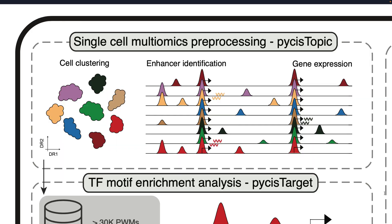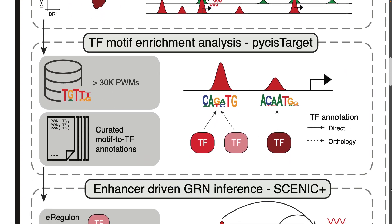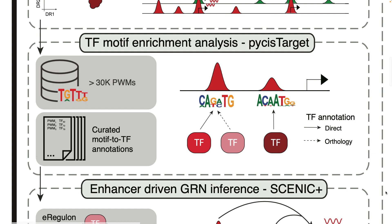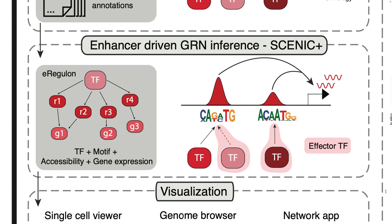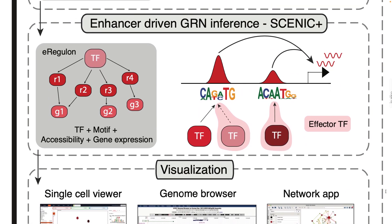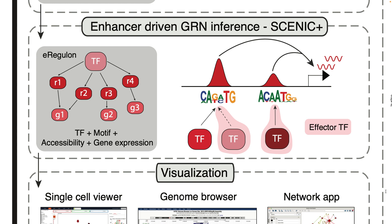ScenicPlus consists of three main steps. First, ScenicPlus identifies enhancer candidates by analyzing single-cell ATAC sequencing data using Cisformer topic. Second, the sequence of these candidate enhancers is scanned for the presence of transcription factor motifs, using motif enrichment analysis and a database with more than 30,000 position weight matrices. Finally, this information is combined with gene expression data to link transcription factors to regions and regions to target genes.